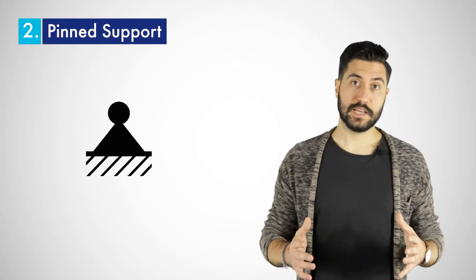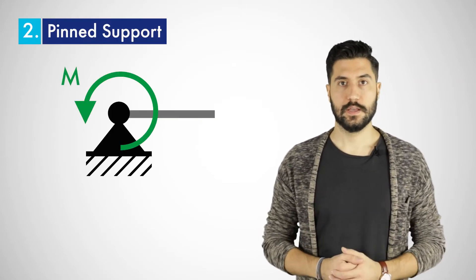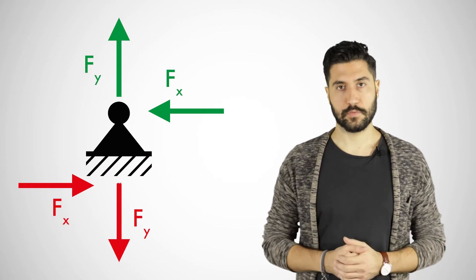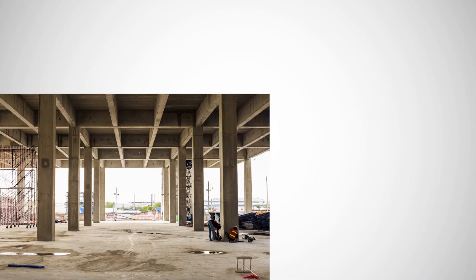Next we have the pin support. This type prevents all displacements but enables rotations. In other words, it can only absorb forces in the x and y directions and thus provides two support forces. Simple connections in concrete and sealed structures are often considered as pin supports. These are also called hinged supports.